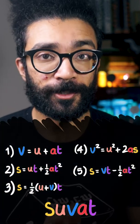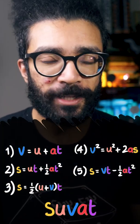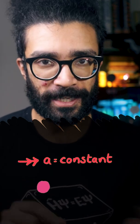Hey everyone! Now the SUVAT equations are a series of five equations of motion that deal with objects moving in a straight line with constant acceleration.